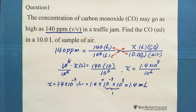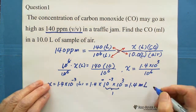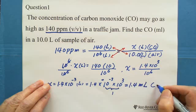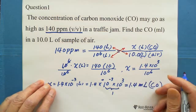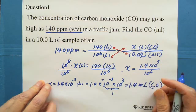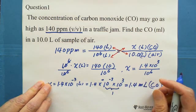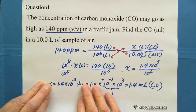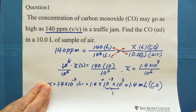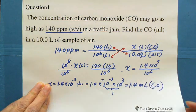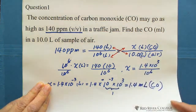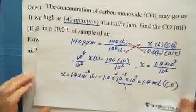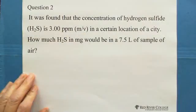So the answer is 1.4 milliliters. In 10 liters of a sample of air, there are 1.4 milliliters of carbon monoxide. This is Question 1. Now, Question 2.